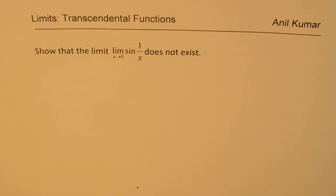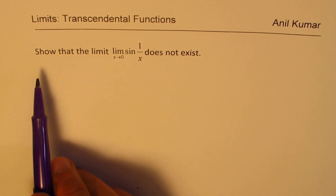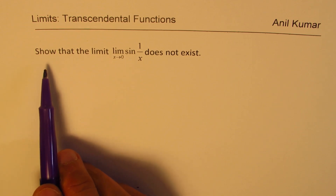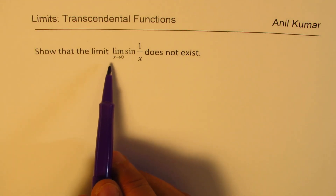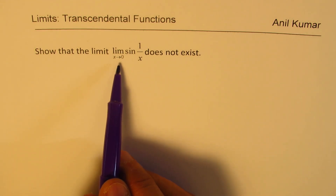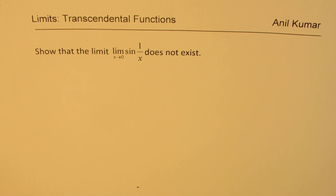I am Anil Kumar. Welcome to my series on limits. We are talking about transcendental functions. Here I have taken trigonometric functions. The question here is to show that the limit for x approaches 0, sine of 1 over x does not exist.